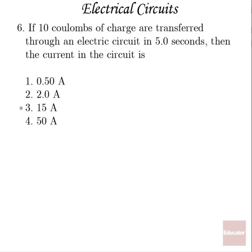On to number 6: If 10 coulombs of charge are transferred through an electric circuit in 5 seconds, then the current in the circuit is? Well, current is charge divided by time, so that will be 10 coulombs divided by 5 seconds, or just 2 amperes. Correct answer there, number 2.